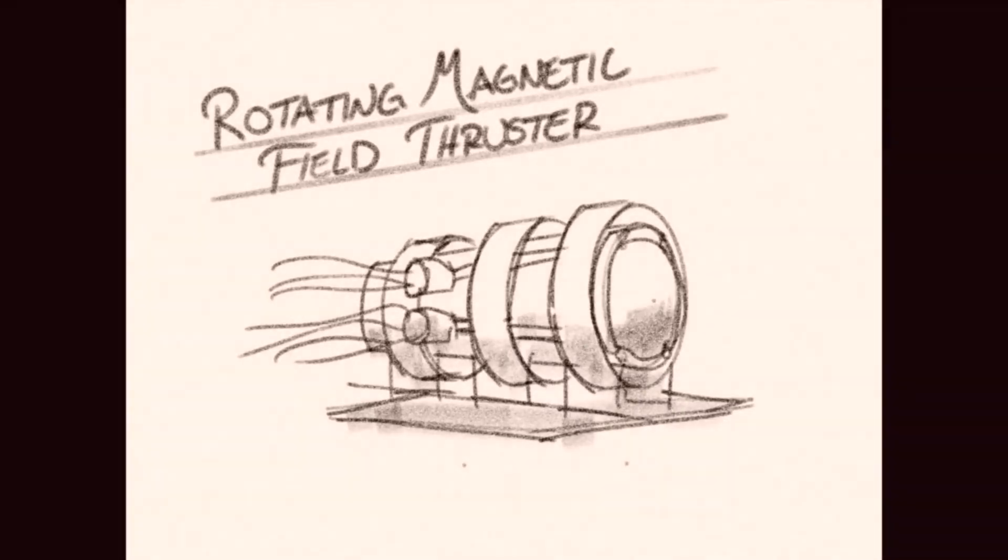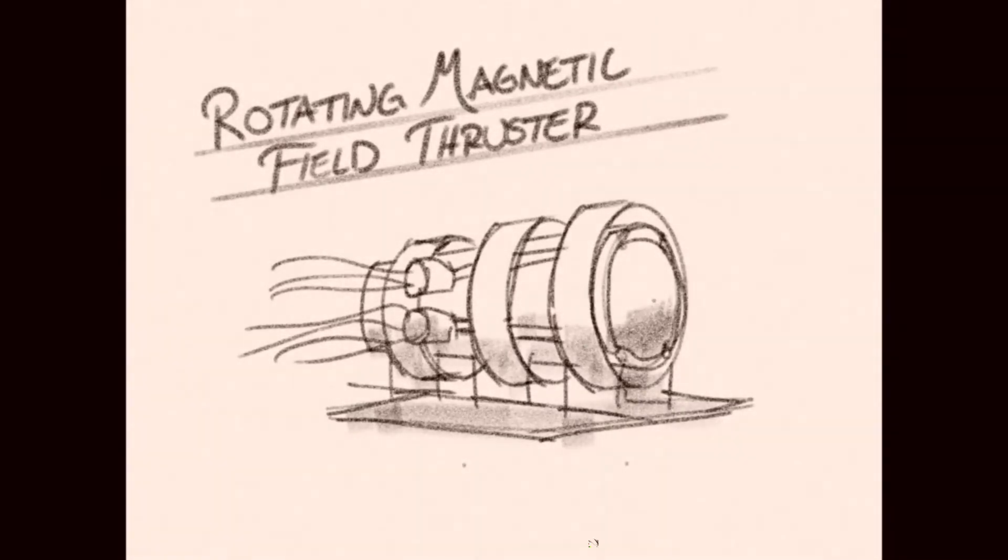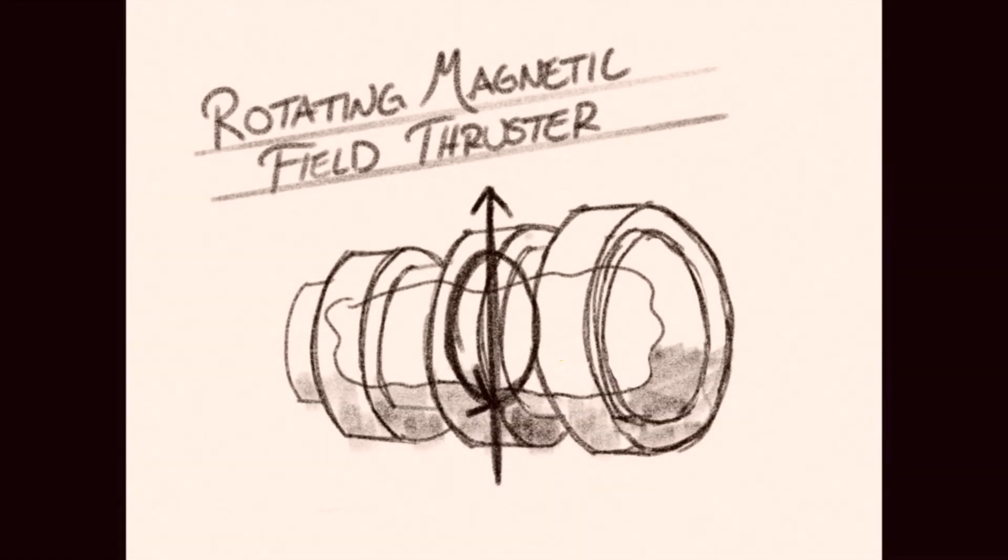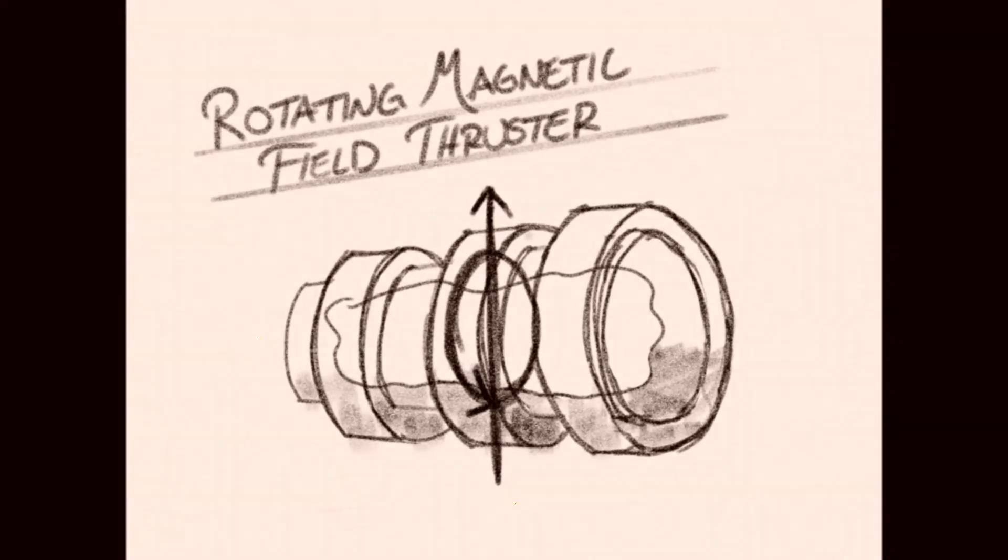For the RMF thruster, this concept remains largely identical. However, instead of a mechanical rotor, the thruster acts upon an electrically charged gas called plasma, such as that found in low pressure sodium vapor lamps.